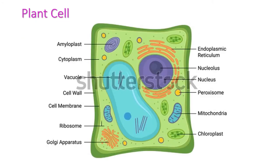This is the structure of a plant cell, where we can see the cell wall, cell membrane, ribosome, Golgi apparatus, and then chloroplast, mitochondria, nucleus — a well-defined nucleus and nucleolus — and then endoplasmic reticulum, cytoplasm, and a large central vacuole.